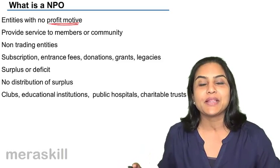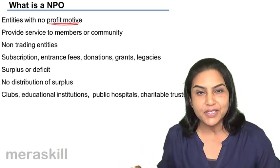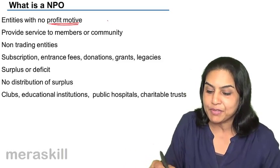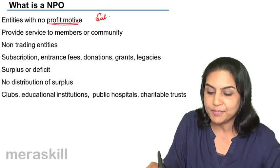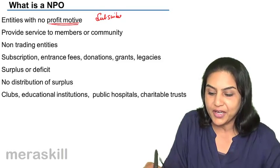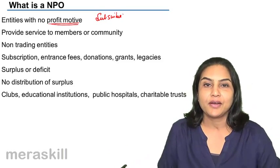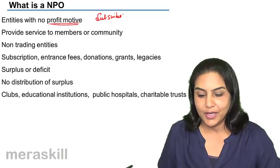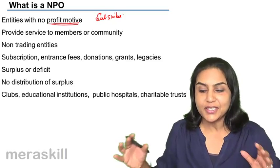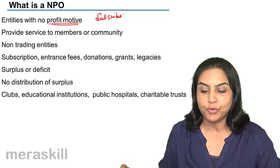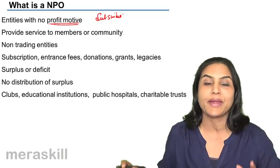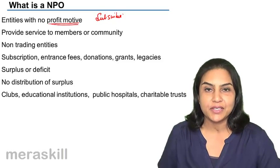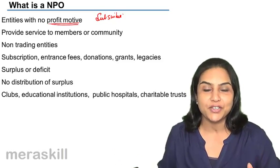The members bring in some money every month or year called a subscription. These funds would be used to buy new books and to maintain the library. Suppose it so happens that there are surplus funds.